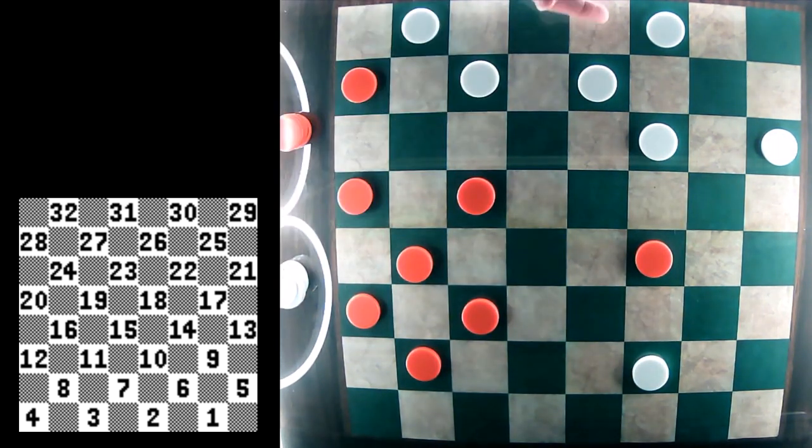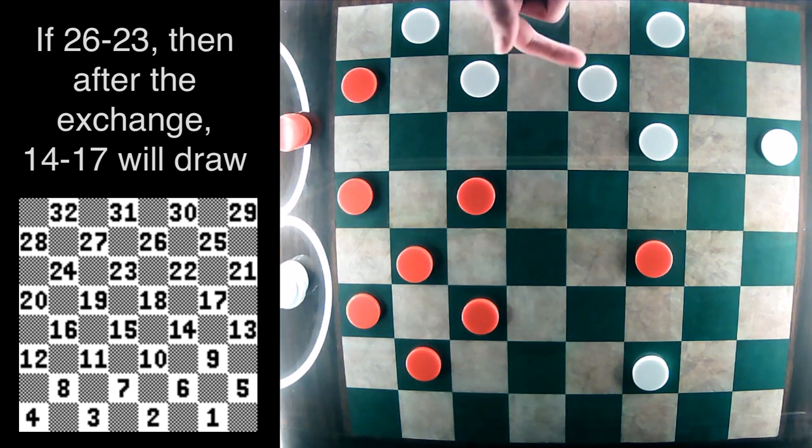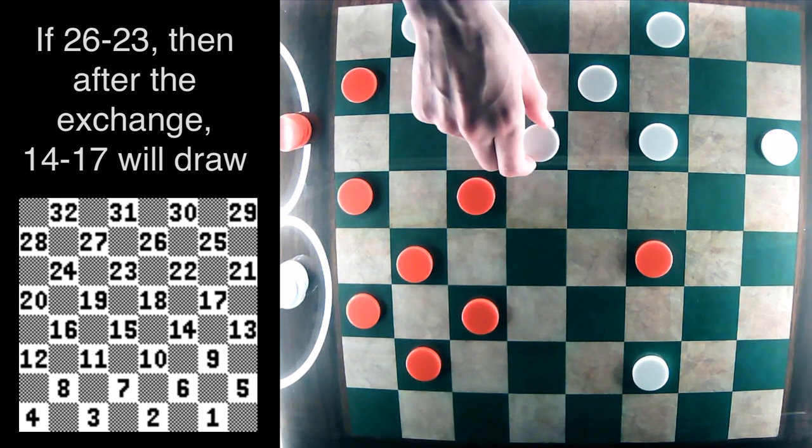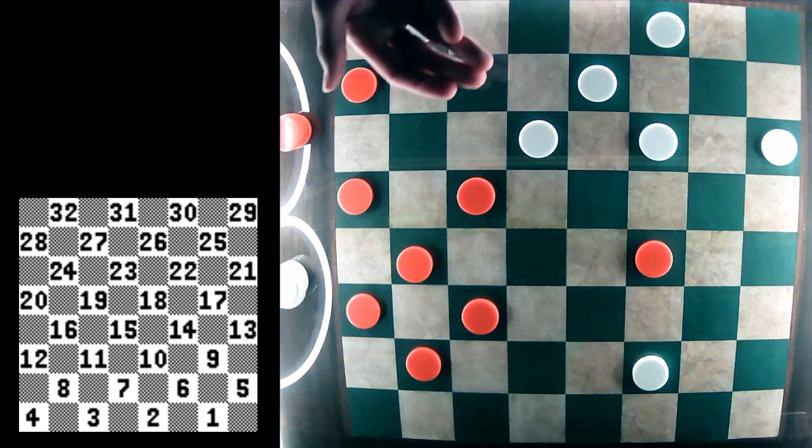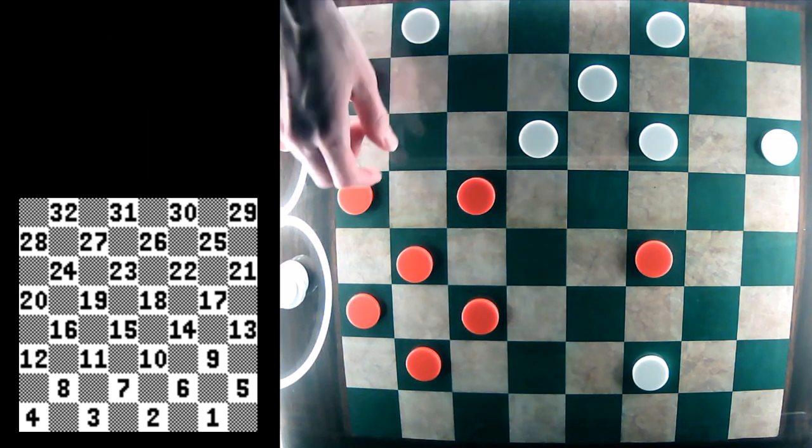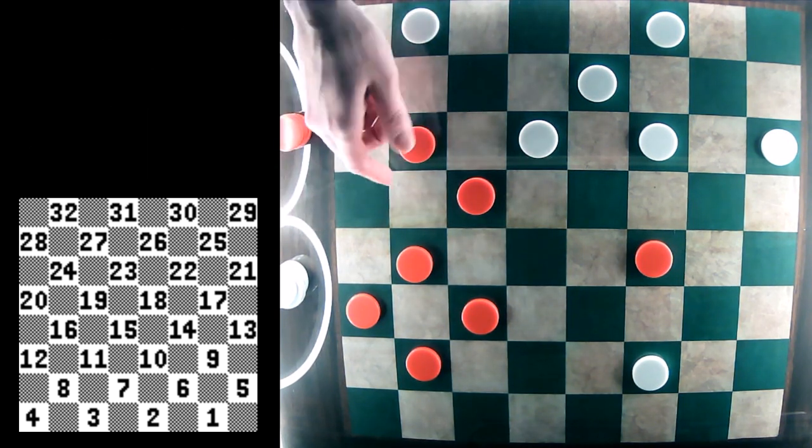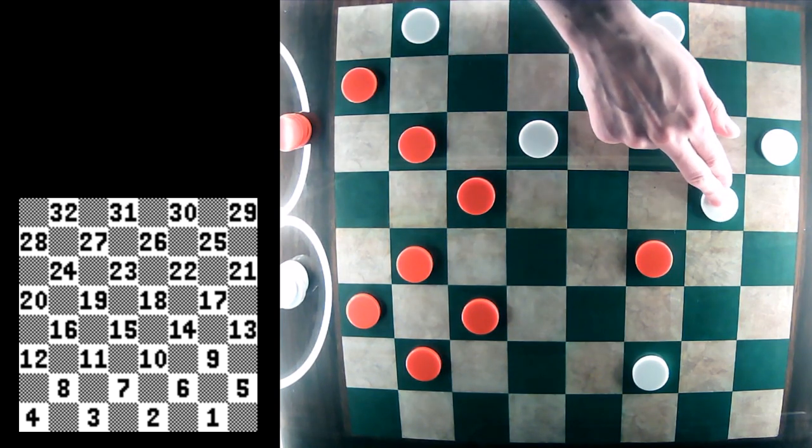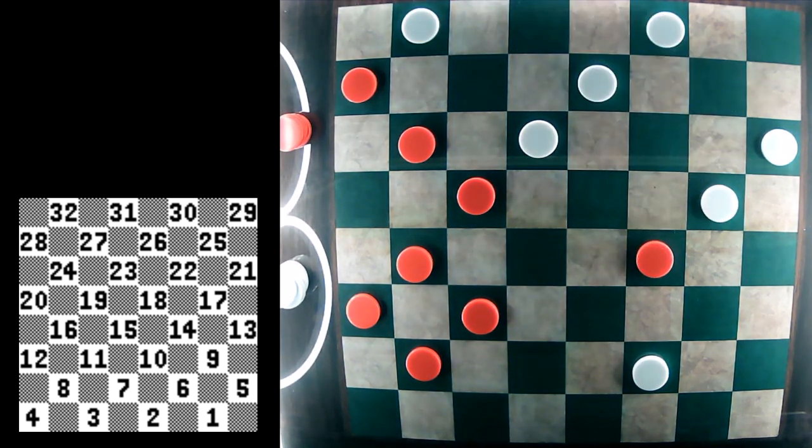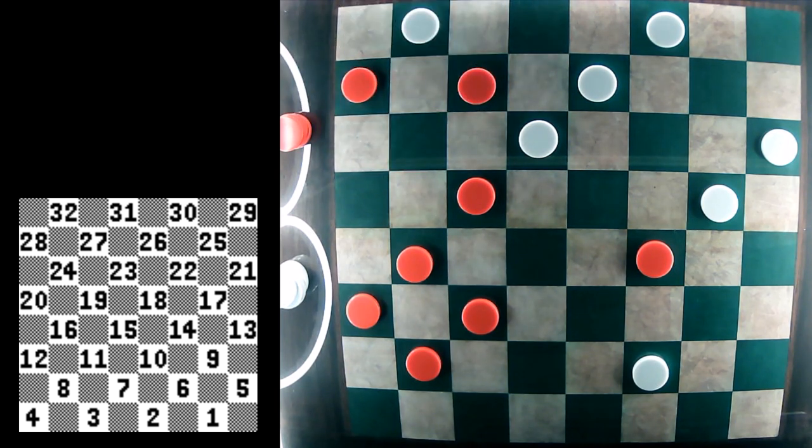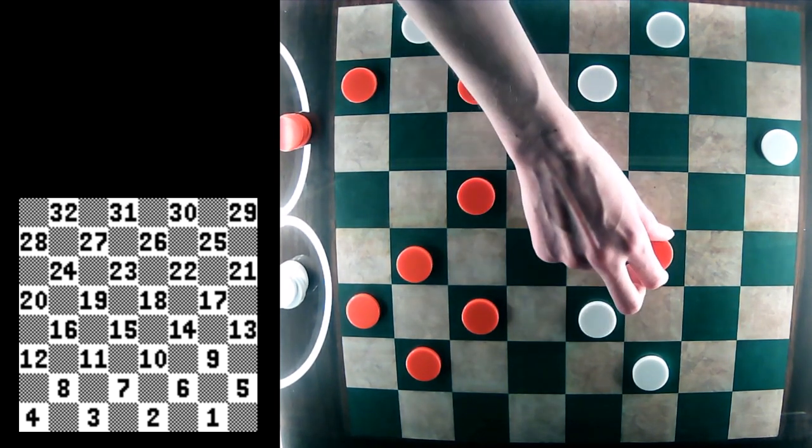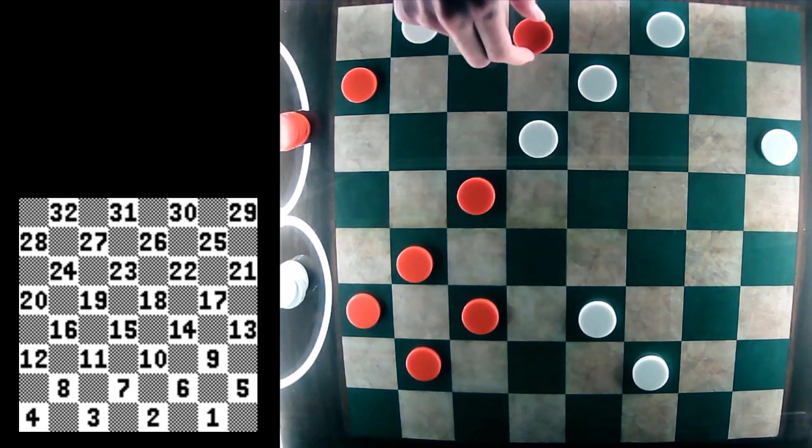And then white can play the 26-23 exchange or 27-23, which allows or forces red to make some critical moves here. So 20-24. White is looking to attack the piece on 14. Red is going to go in for a king, which it does now.